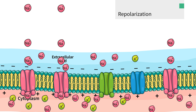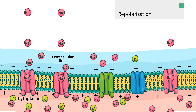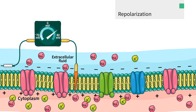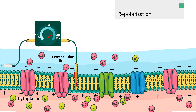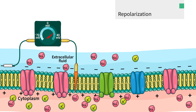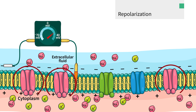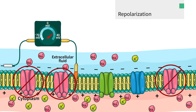At the same time, the voltage-gated sodium channels are closing at about plus 35 millivolts after only a short time of being open. Now that sodium channels are closed and the potassium channels are open, sodium isn't rushing in anymore. Instead, potassium is rushing out.